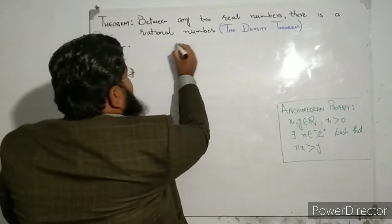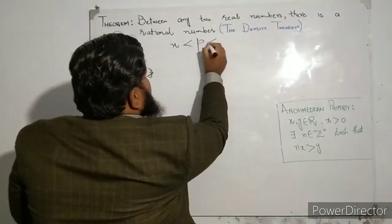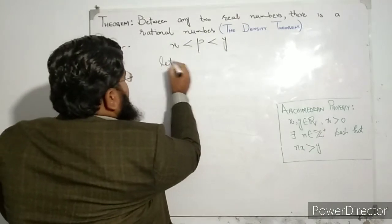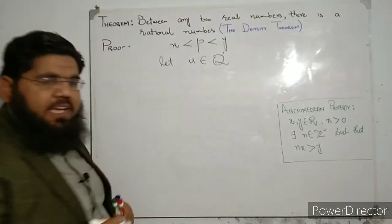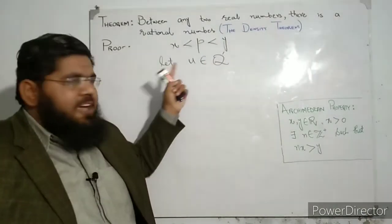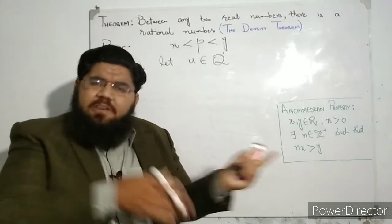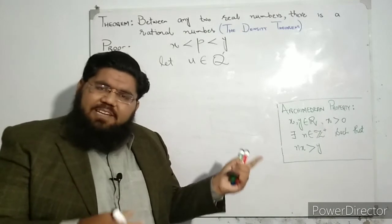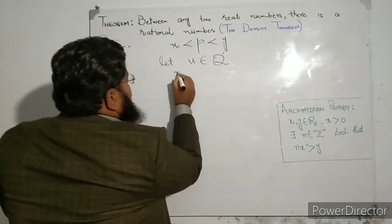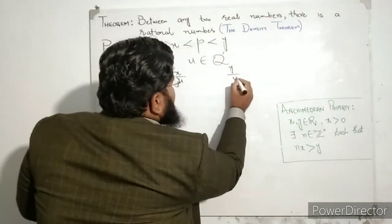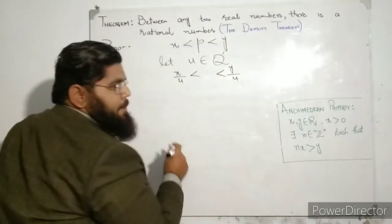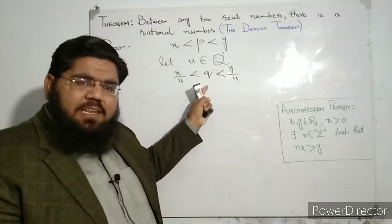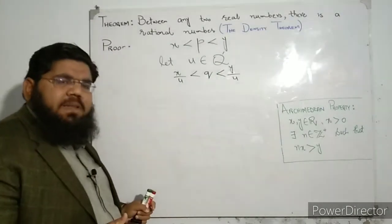We have just proved that between any two real numbers x and y there exists a rational number. Now suppose u is any irrational number. If I divide x and y by u, the results x over u and y over u are still real numbers, because the real numbers are closed under division. By the density theorem, there exists a rational number q between x over u and y over u. Multiplying through by u, we can write x is less than uq is less than y.